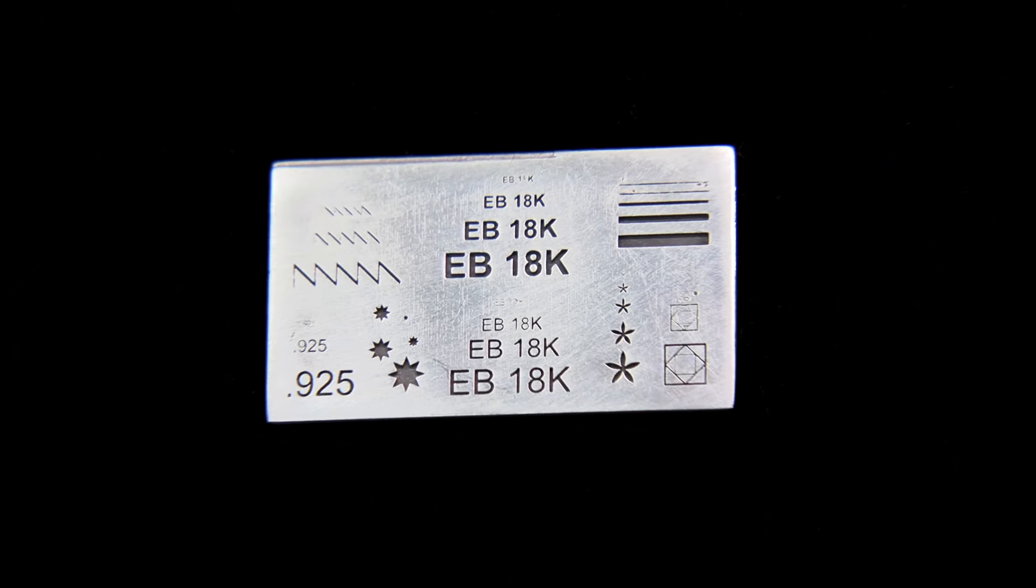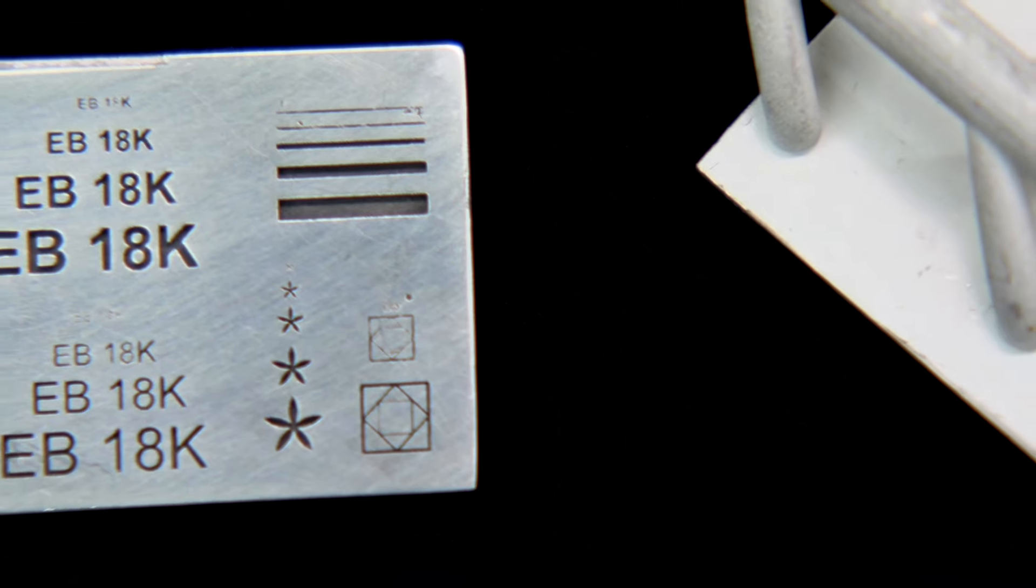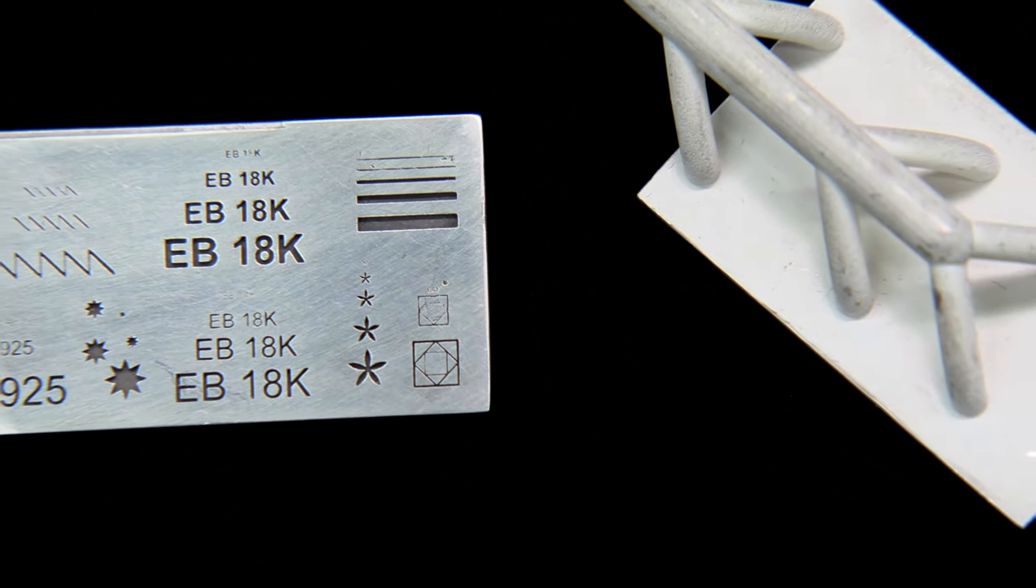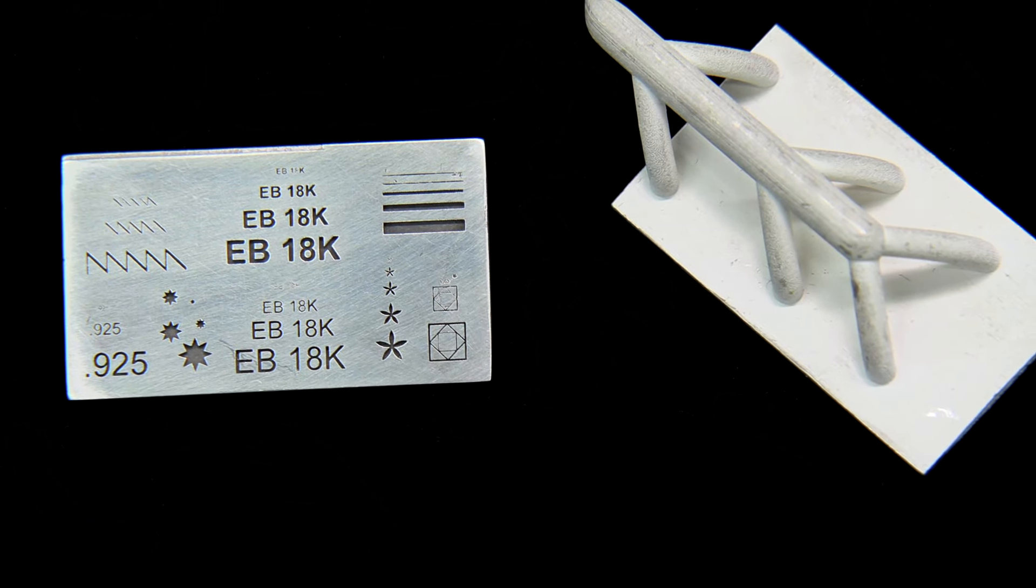What he did was he engraved stars, designs, bars, and he kept getting smaller and smaller. When we casted it for him and sent it to him, now he could see how small he can actually go to put into his pieces. That was very smart on his part.